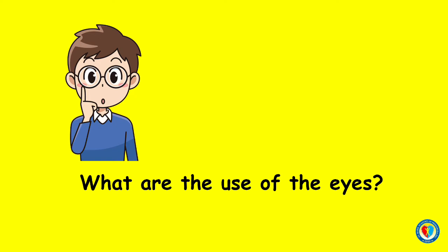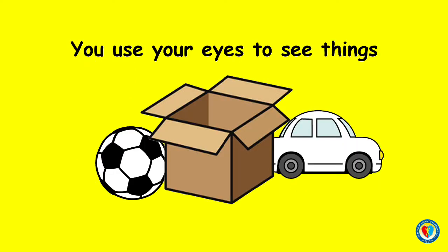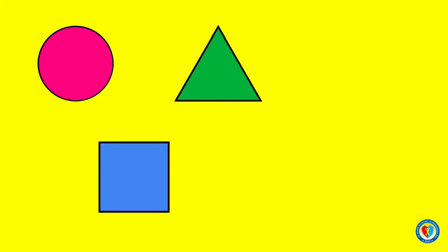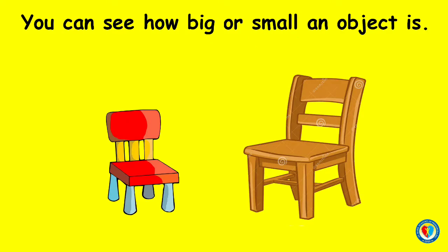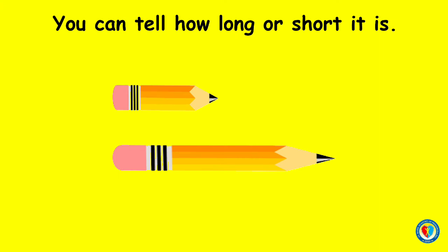Now, what are the uses of the eyes? You use your eyes to see things. You can then tell the shapes of things you see. You can tell if an object is in the shape of a circle, square, triangle, rectangle, or even a star. With your eyes, you can tell the size of an object. For example, you can see how big or small an object is, and you can tell how long or short it is.